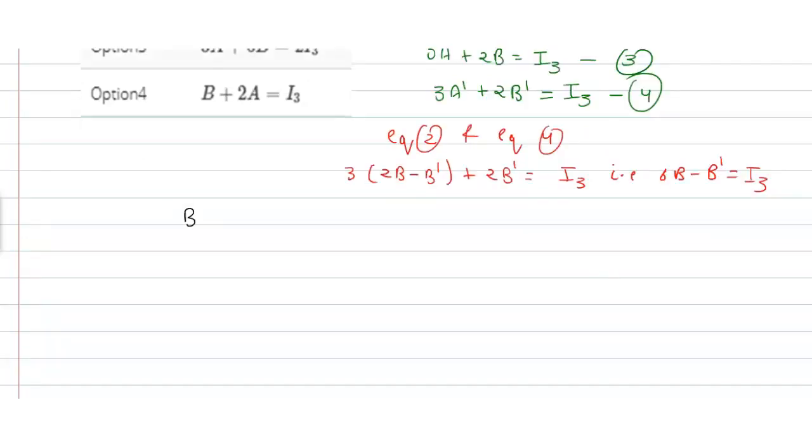Writing B^T = (A + B)/2, we get 6B - (A + B)/2 = I₃.